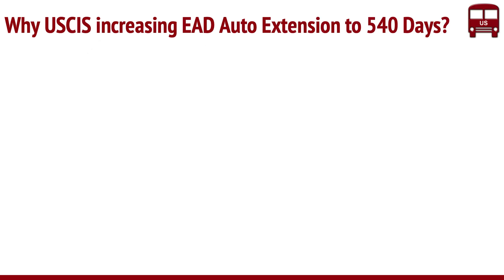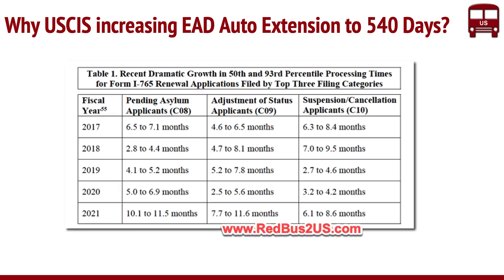So firstly, why are they increasing this? Earlier in March, there was a big announcement by the USCIS director that they want to streamline the whole processing times. And now they are increasing this — what is the rationale behind it? What they said is before 2019, what you're seeing on the screen is the processing times for the top three EADs processed by USCIS. Before 2019, the average internal processing time metric was about less than three months.